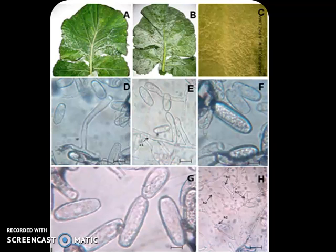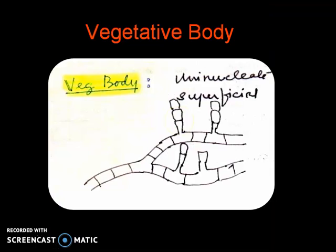This is a cruciferous leaf, and these are micro photographs of conidia. This is the vegetative body — branched hyphae which are septate with a single nucleus in each septum. It is superficial, attached to the host only through the haustorium, which is sent inside the host tissue for drawing nourishment.